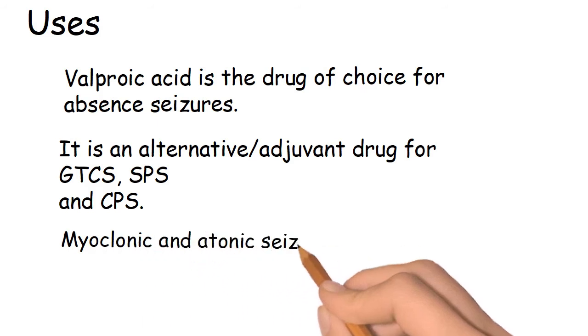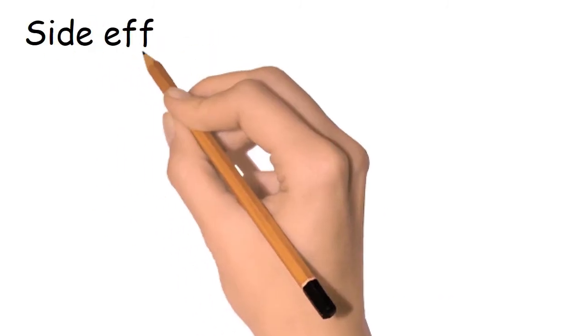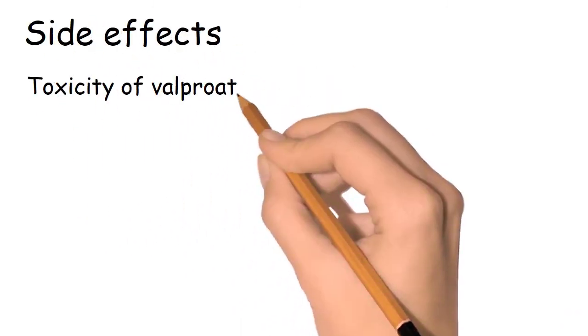For myoclonic and tonic seizures, control is often incomplete, but valproate is the drug of choice. Side effects: toxicity of valproate is relatively low.